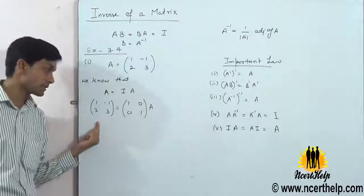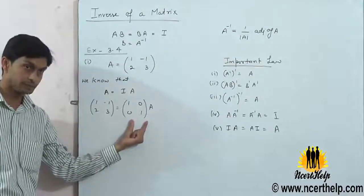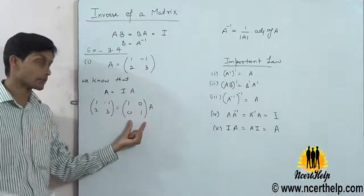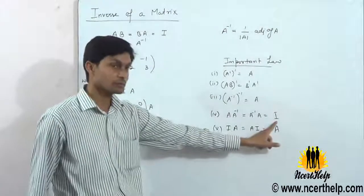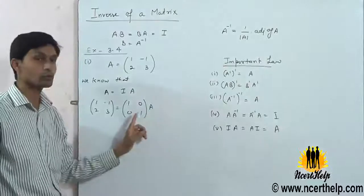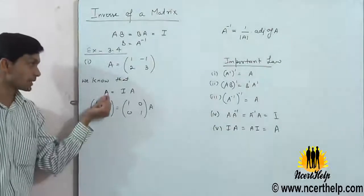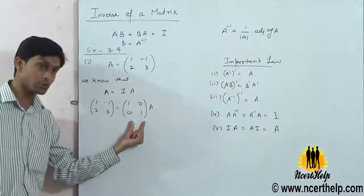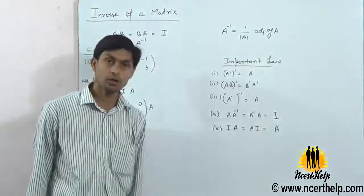Whatever operations you apply, you apply them to both LHS and RHS. If the LHS is becoming an identity matrix, then the RHS will change accordingly. When the LHS becomes identity matrix I, the RHS will become A inverse, because by using the formula, A equals I times A.